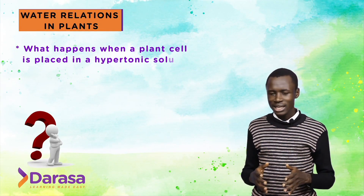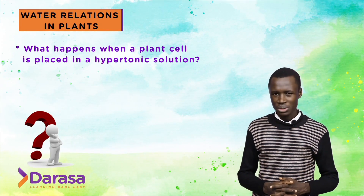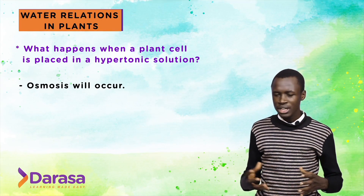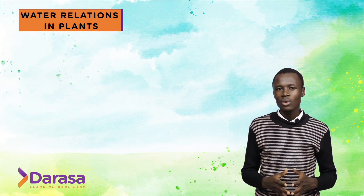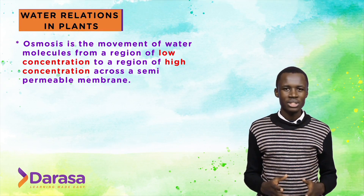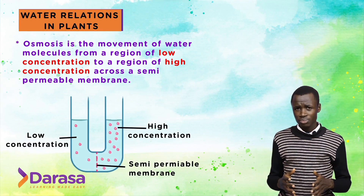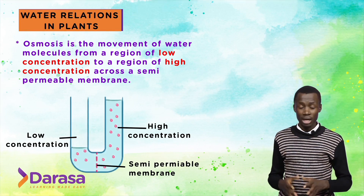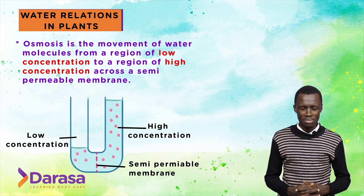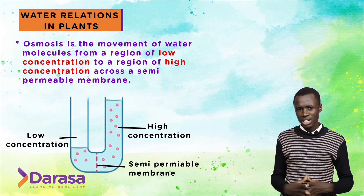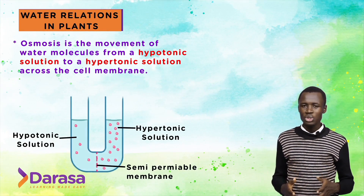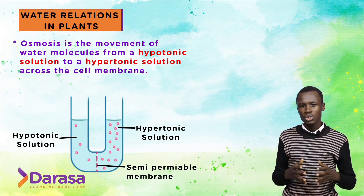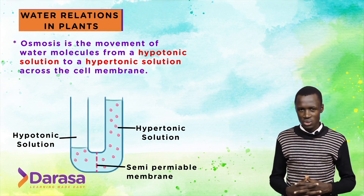When a plant cell is placed in a hypertonic solution, osmosis will occur. Osmosis is the movement of water molecules from a region of low concentration to a region of high concentration across a semi-permeable membrane. Another definition: osmosis is the movement of water molecules from a hypotonic solution to a hypertonic solution across the cell membrane.